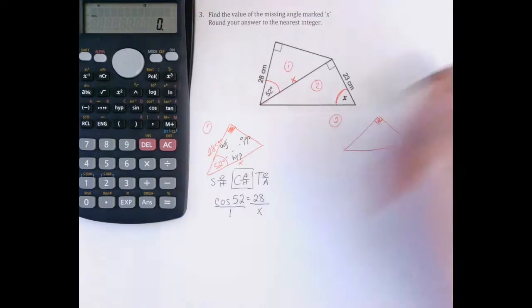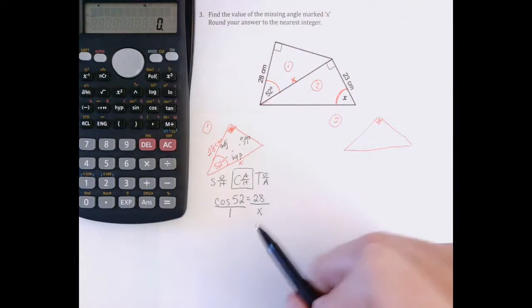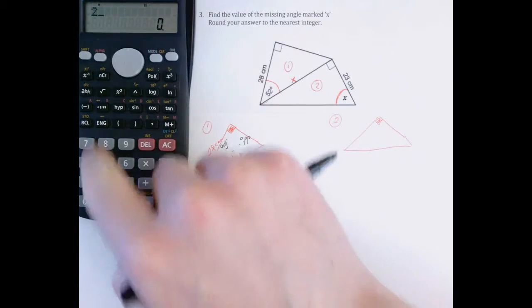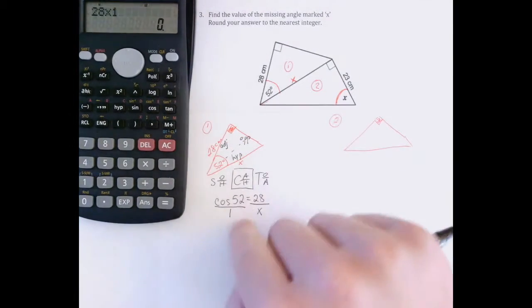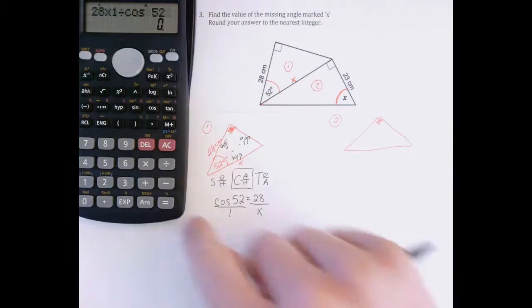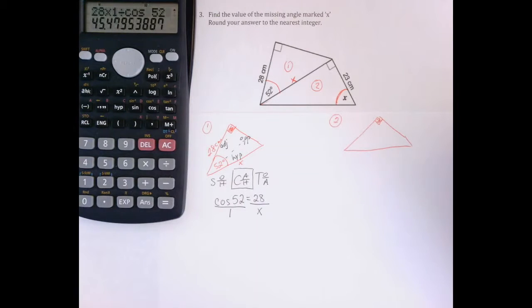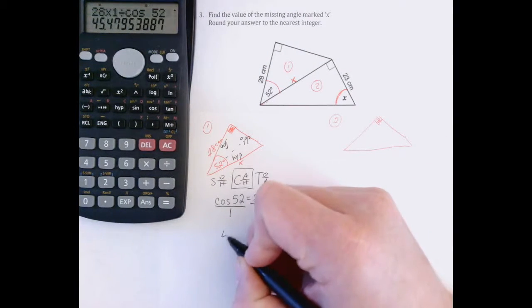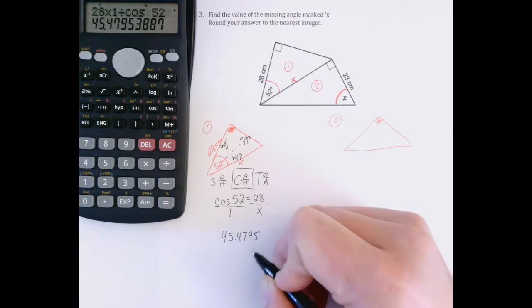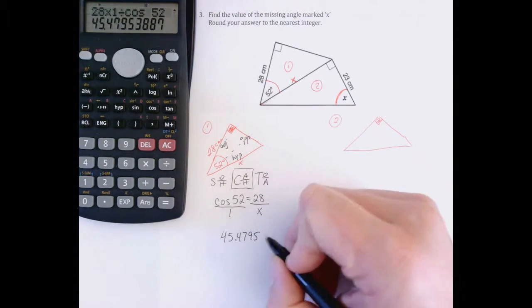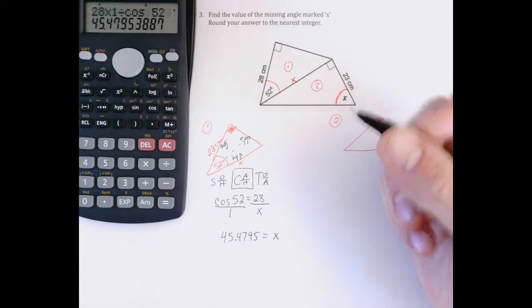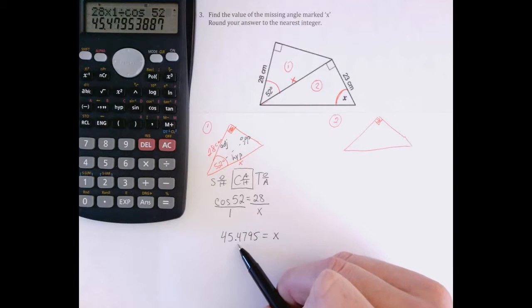So I'm going to create my equivalent fraction so I can cross multiply. All I need to do to solve is multiply the diagonal values and divide by the other one. So here I'm going to do 28 times 1. That's multiplying my diagonals. Could do it in the other direction too. Divided by cos of 52, and that gives me 45.4795. I'm going to leave four decimal places because I've not finished the question. I don't like rounding too much until the very end of the question. So I'm going to leave four decimal places to stay as accurate as I can. And I know that this side measures 45.4795.